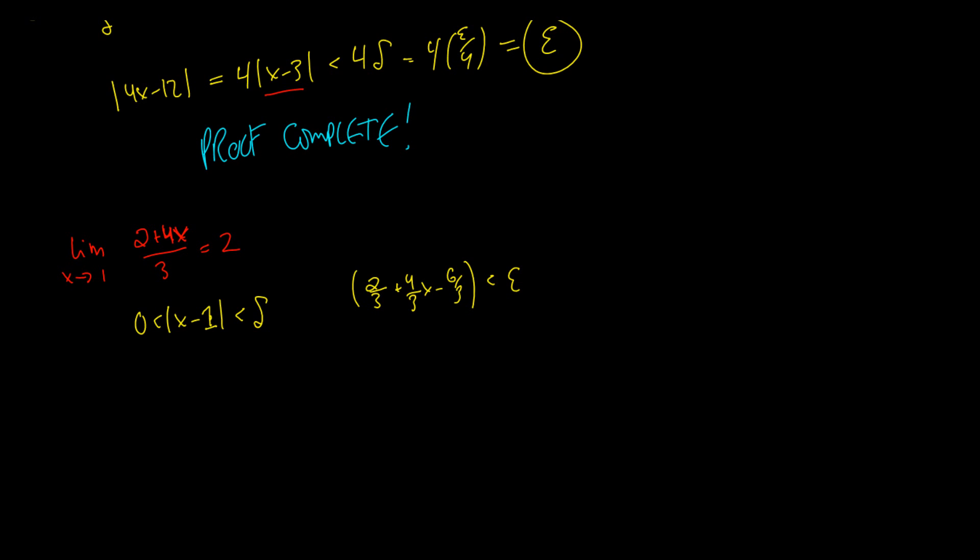Okay, so if we want to somehow make that equal to that. Okay, so let's subtract. So negative 4 thirds plus 4 thirds x is less than epsilon. Of course, these are absolute values. So if we just take out 4 thirds, then that's x minus 1 is less than epsilon.